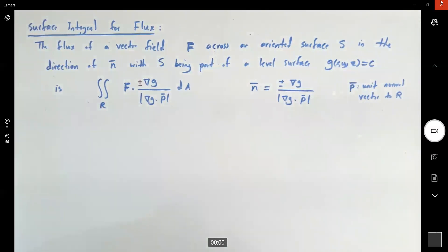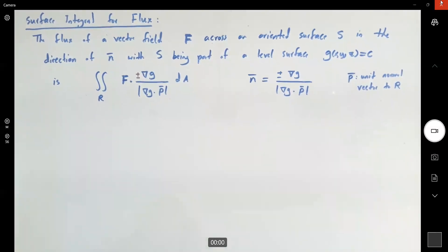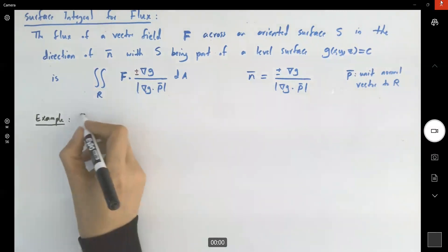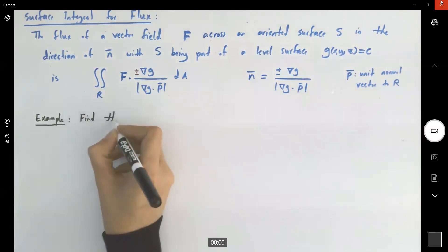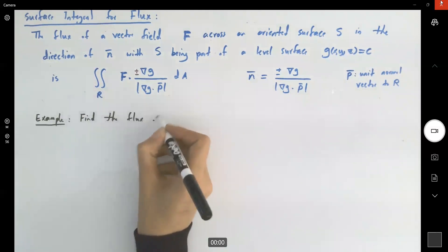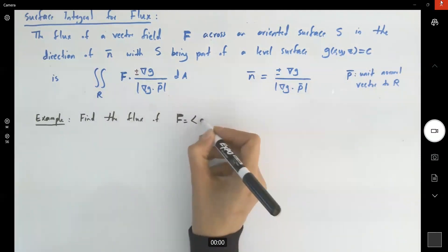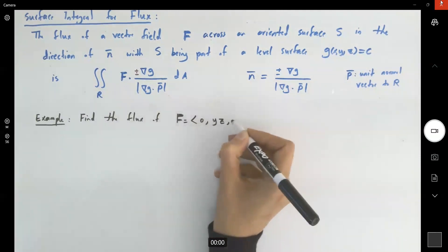Let's go over one example to feel more comfortable about what's happening here. In this example, we have the following scenario. Find the flux of the vector field given to us as (0, yz, z²).